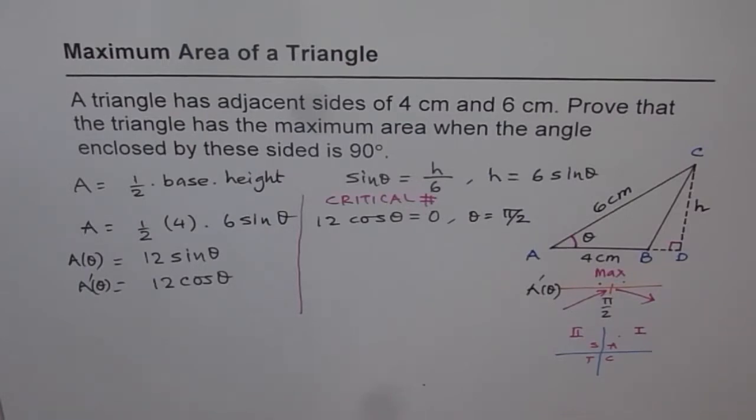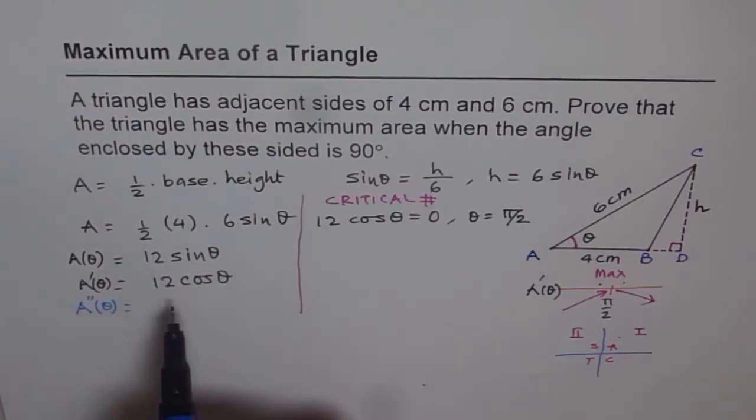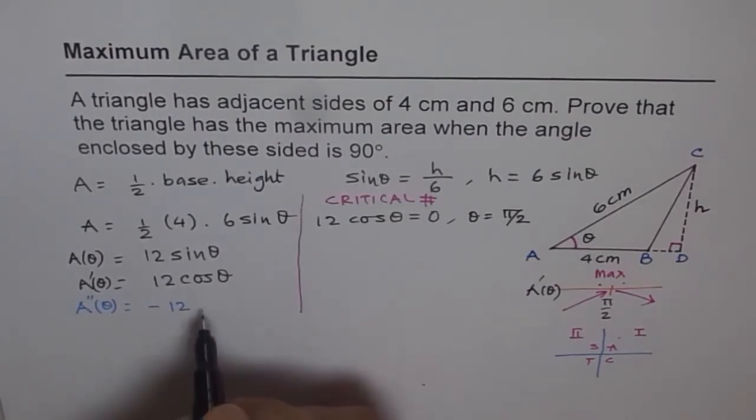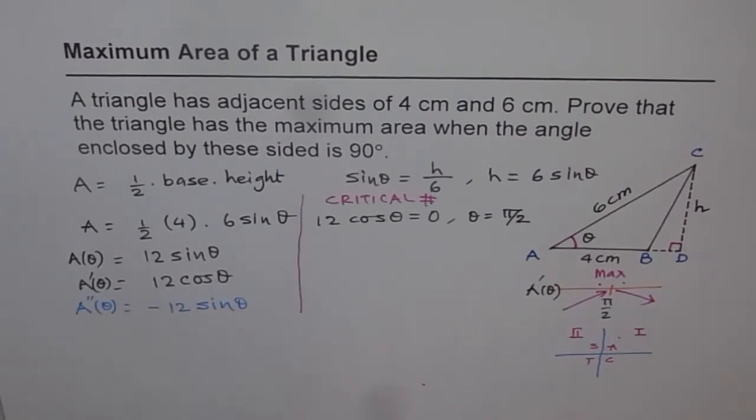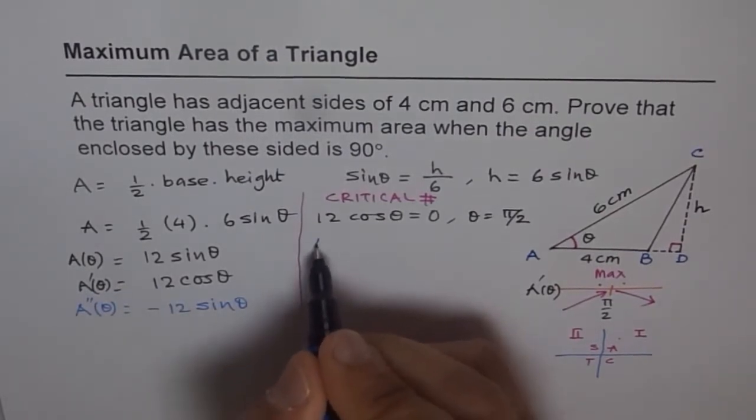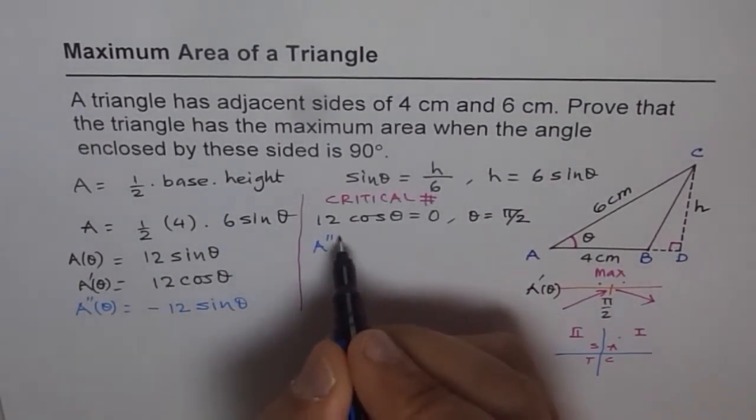Now let us also prove it using the second derivative test. That means what we will do here is we will find the second derivative. So if you find second derivative what do you get. You get minus 12 sin theta. That is the derivative for 12 cos theta. Now let us check whether this value A double dash is positive or negative at pi by 2.